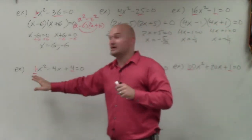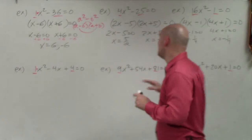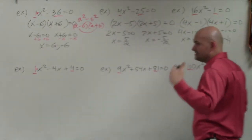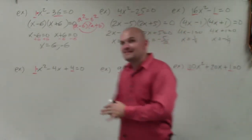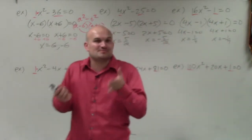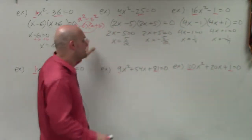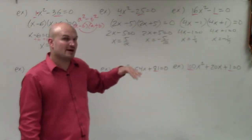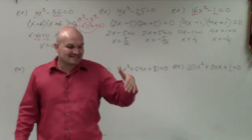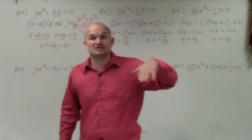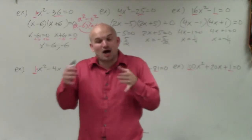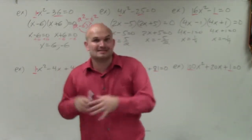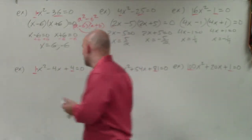Now we have square terms in the front and the back, but we also have a trinomial — so the middle terms are not canceling out like they did in the difference of two squares. What this creates is perfect square trinomials, where our two binomial factors are going to be exactly the same.